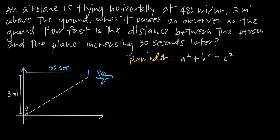In this video we're doing another related rates problem. In this particular problem we've been told that an airplane is flying horizontally at 480 miles per hour, 3 miles above the ground when it passes an observer on the ground, and then we're asked how fast is the distance between the observer and the plane increasing 30 seconds after that happens.